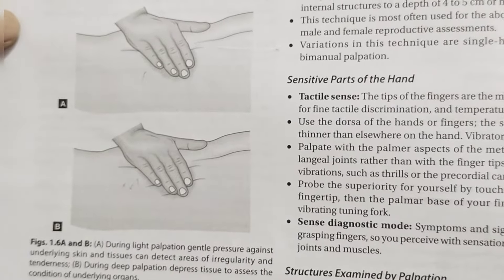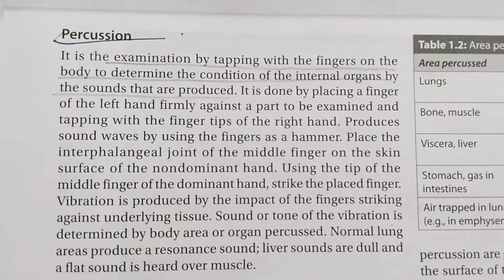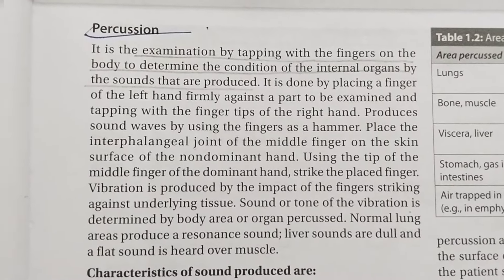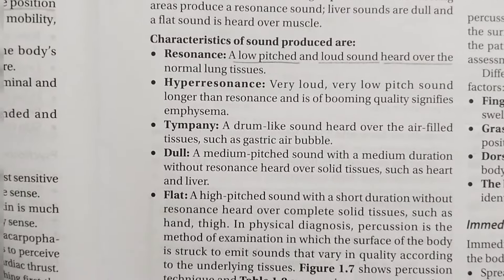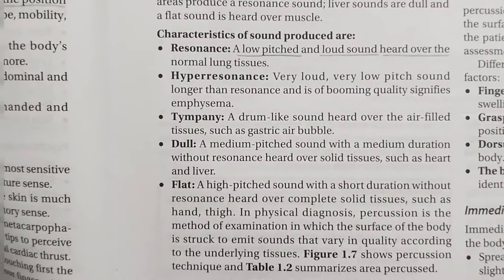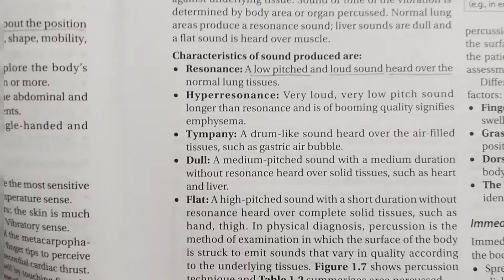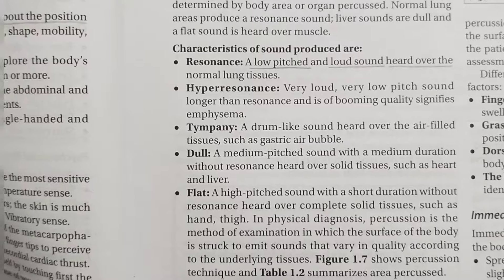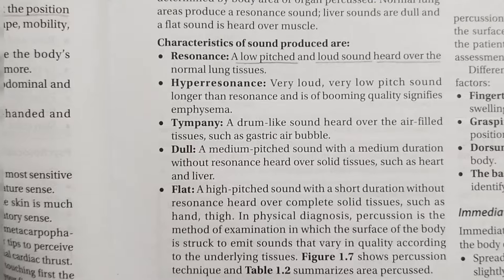Next we will discuss percussion. Percussion is an examination method in which we tap fingers to determine the internal organ sound. In percussion, we feel or hear the sound. The sounds we identify are: resonance, hyper-resonance, tympani, dull, and flat. For example, if you have done a physical examination, you get a dull sound in the lungs when there is consolidation, and resonance is high in the normal lung. In the heart area, you get dull sound.